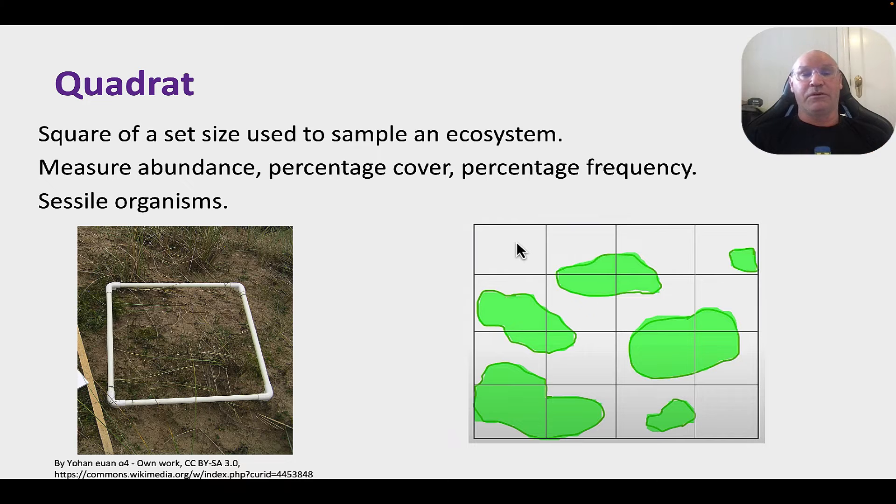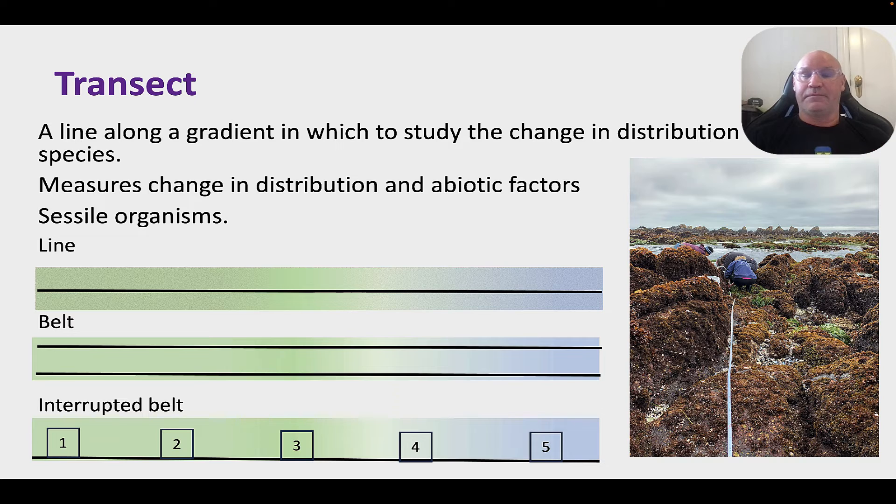The transect is a line and it's ideally used along a gradient in which to study the change in distribution of species. So, we might run it from the high tide mark to the low tide mark or down a slope towards a creek and we can use it to measure the change in distribution and change in abiotic factors. Again, it's ideal for sessile organisms. So, we have a single line which we call a line transect. With a line transect, we just count the organisms that are in contact with the line. Then, we have a belt transect. So, basically, we have two lines of a fixed known distance between them, maybe a meter between them, maybe five meters between them depending on the ecosystem and we count or measure everything that's inside those two lines. So, inside the belt. So, you can imagine the belt transect is going to have much, much more data but it's going to take much longer.